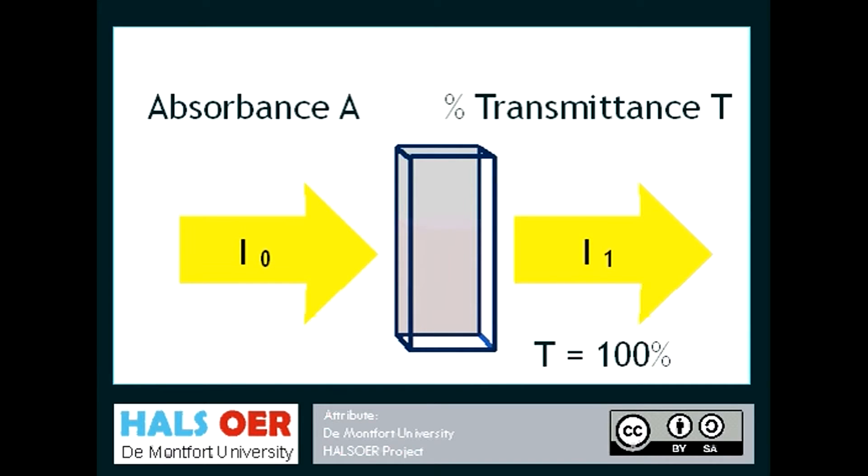If all the light is transmitted, T is 100%, then A is zero. If no light is transmitted, we would say absorption is infinite.